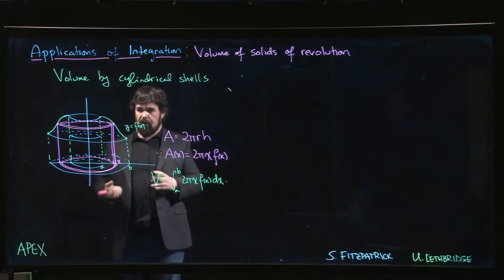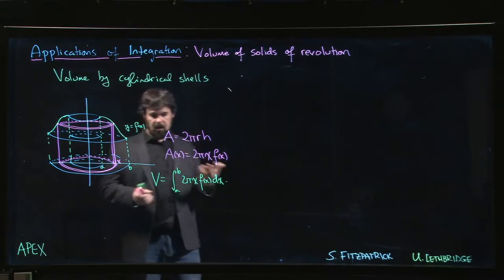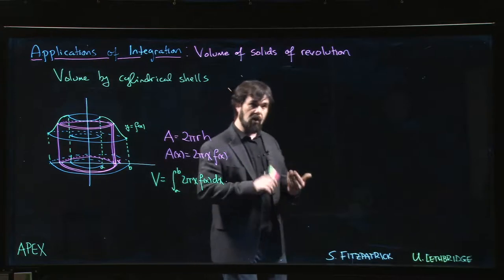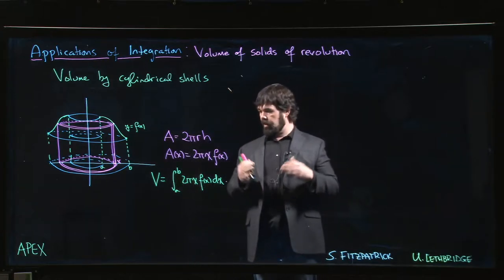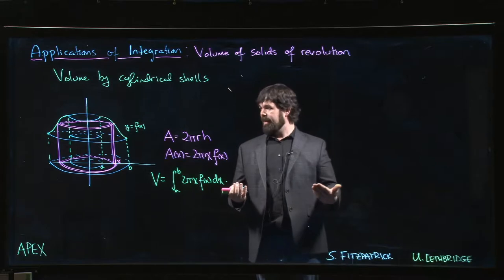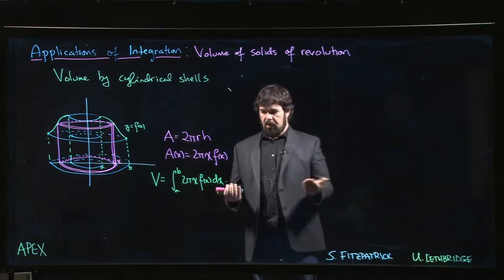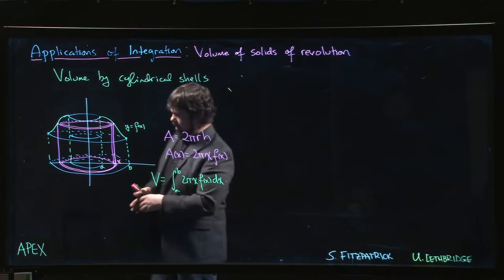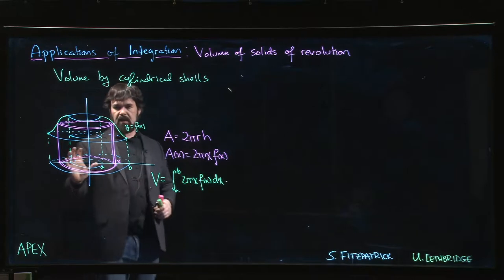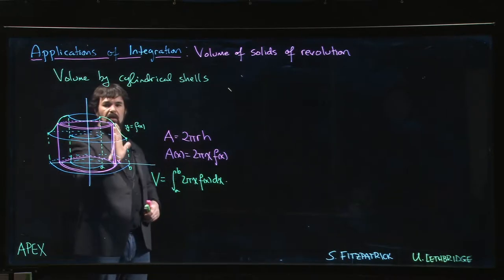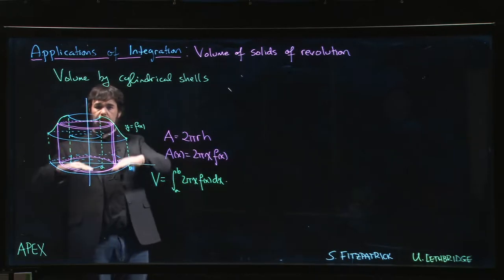That's an alternative volume formula. A lot of problems can end up being solved by either washers or shells—you choose which one you want. There are different reasons why you might choose one over the other. One might be that we can do it as a single integral if we use shells, whereas we had to do it in two pieces if we wanted to do washers.